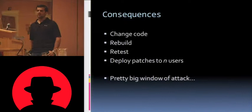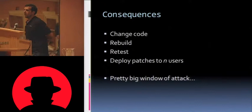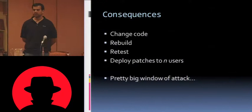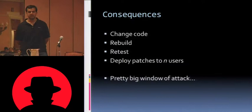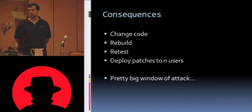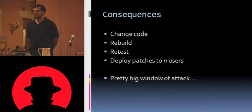So what would the consequences be if this were to happen — if someone were to say, 'Hey, I really did break RSA'? You'd have to go into all your applications, find all the places where you have that algorithm, change that code, rebuild, retest to make sure there are no weird consequences, and then deploy patches to however many users you have — maybe a few dozen, maybe hundreds of millions. This could be a pretty big window of attack. No matter what your intentions or capabilities, it's just going to take a while, and that's a big window of attack for someone to exploit you.